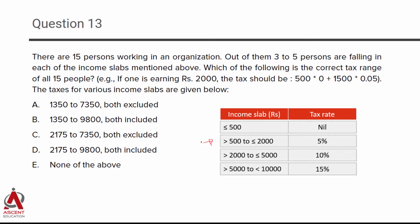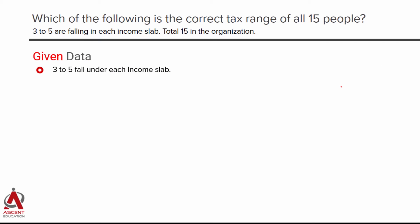The four income slabs given are: less than or equal to 500; greater than 500 up to 2000; greater than 2000 up to 5000; and greater than 5000 up to 10000. For example, if someone's salary is 2000, for the first 500 they pay zero tax (nil rate). For the next 1500, the tax rate is 5% — this 5% is applicable only on that 1500, not on everything.